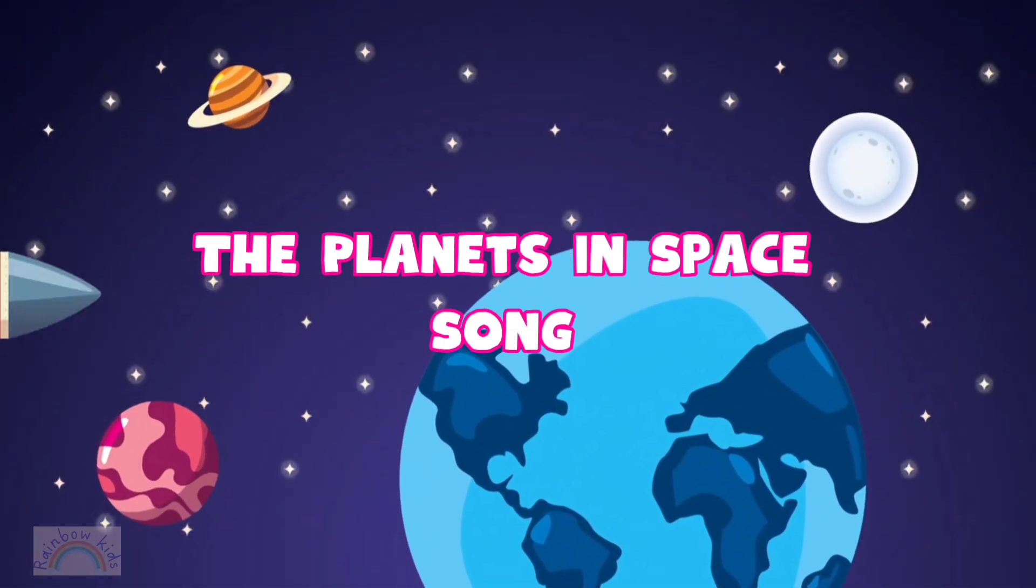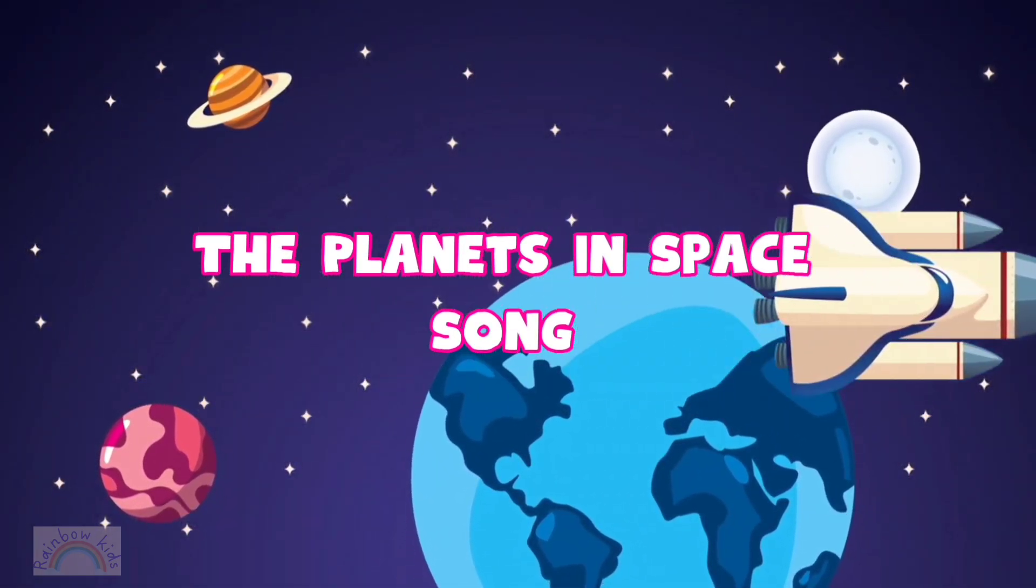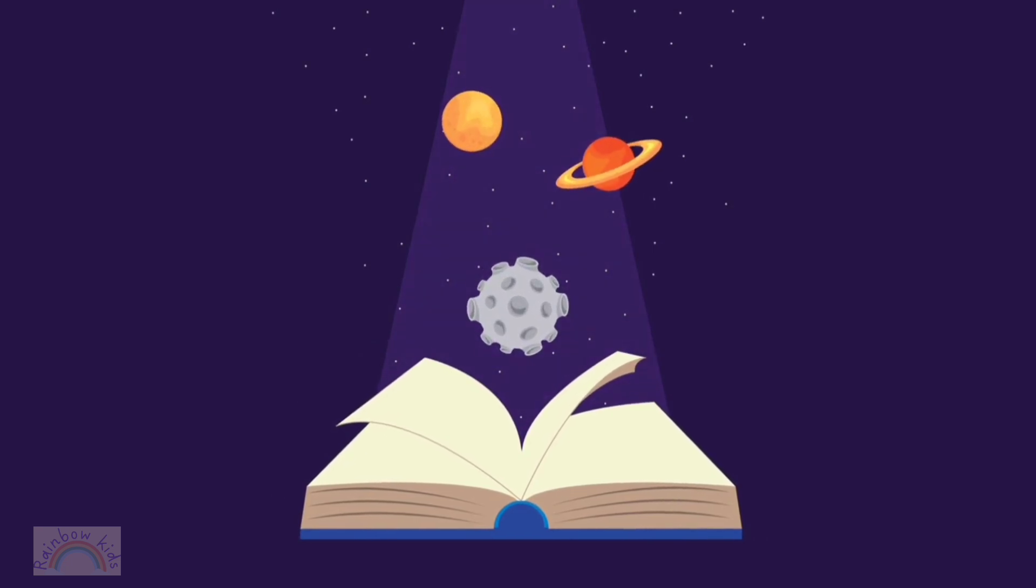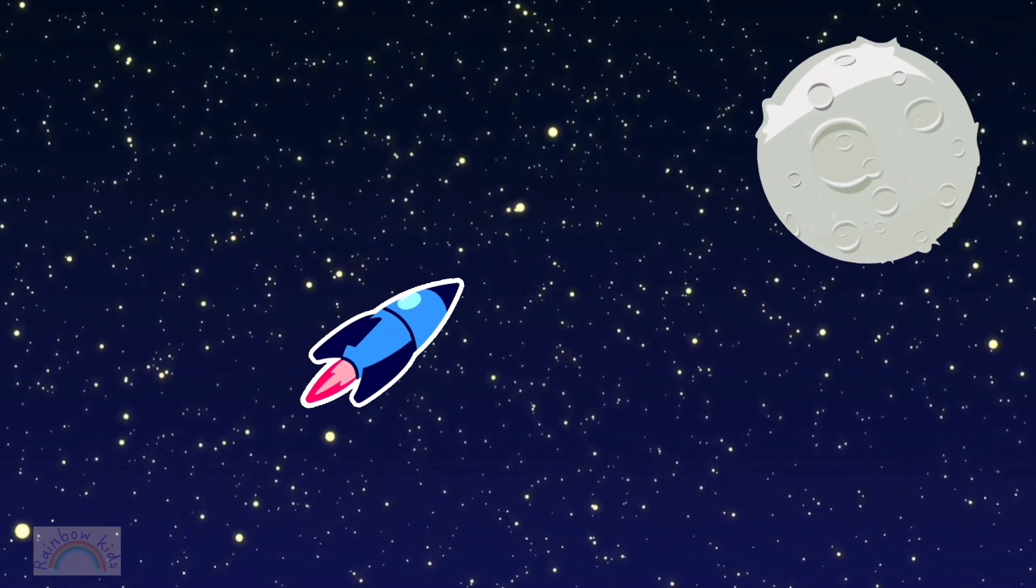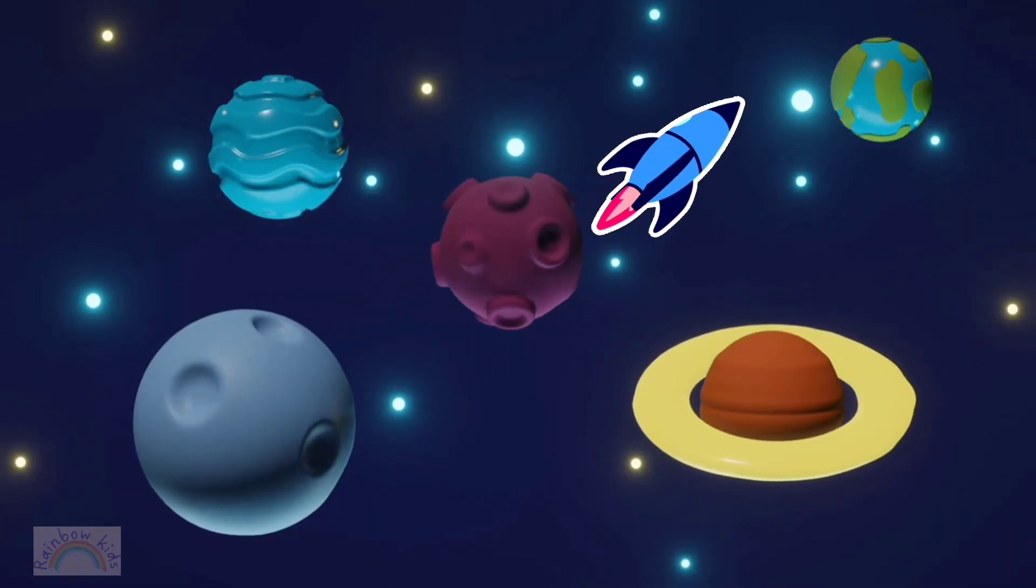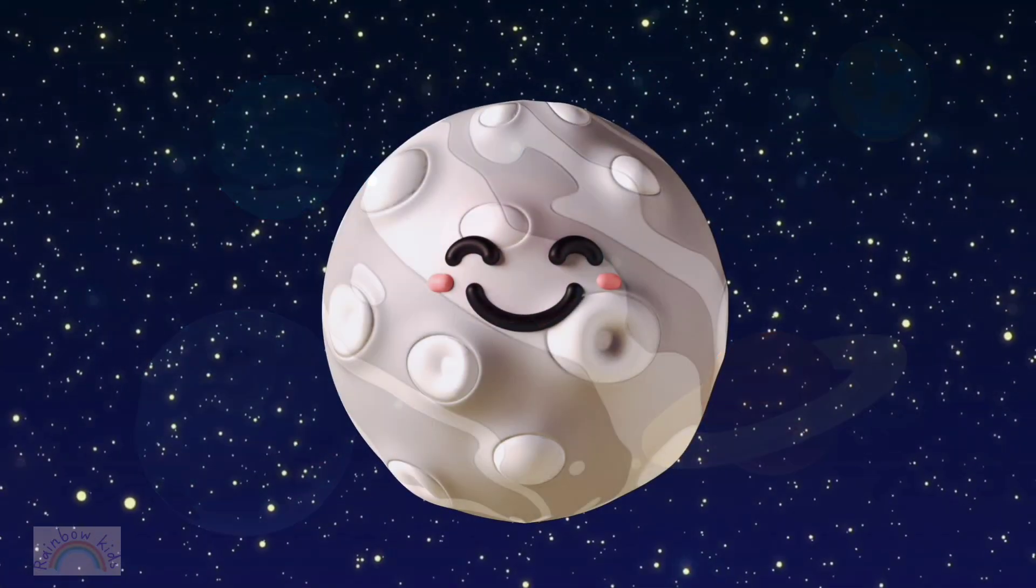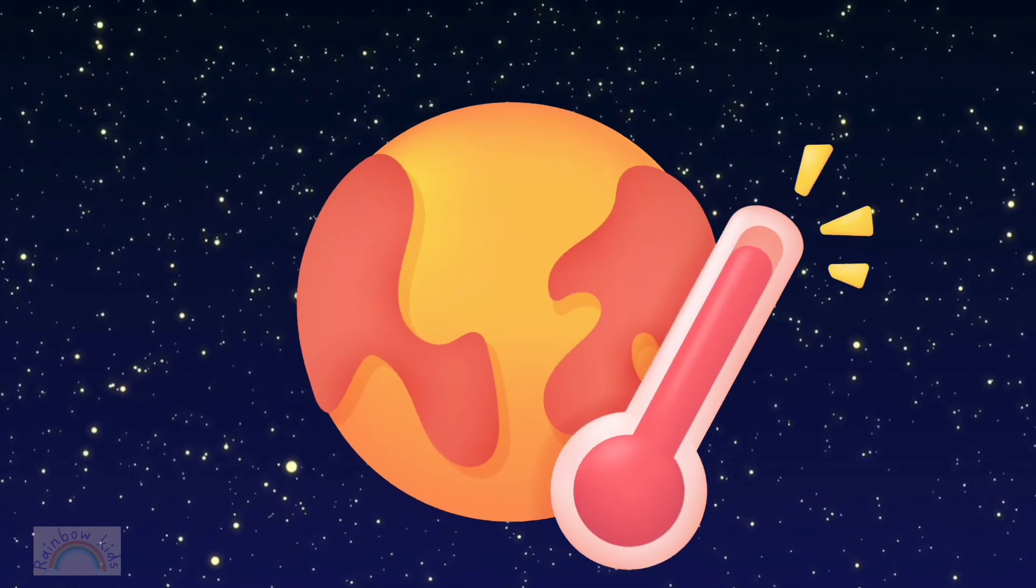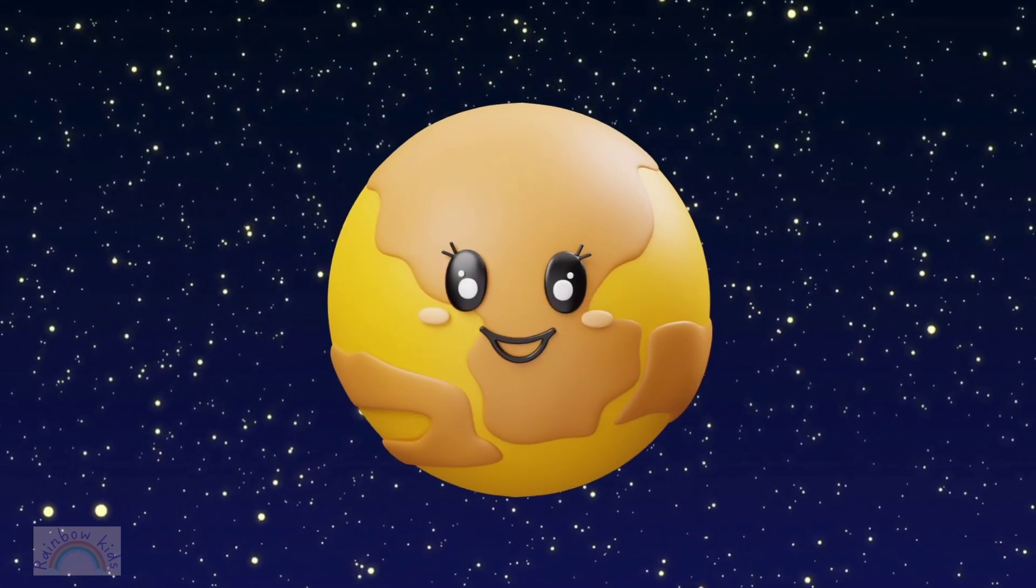Planets in space. Song. Zoom, zoom, zoom. We're flying to the moon. Pass all the planets, we'll be there soon. Mercury is small and hot. Venus is bright in its sunny spot.